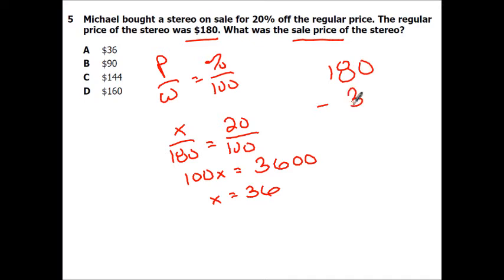So in order to actually solve this, I have to go 180 minus 36. So we're going to borrow from the 8. So we're going to make that 4. 7 minus 3 is 4. $144.